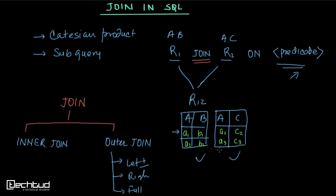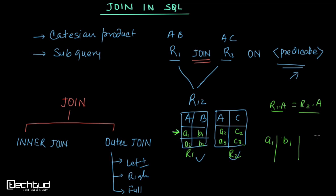Let's take an example. The joining condition is R1.A = R2.A. In case of left join, we don't have any corresponding record for A1 in R2, so for the record A1, B1 there is nothing matching. In the output we will still have A1 and B1, and for the right side attributes A and C we will have null, null.